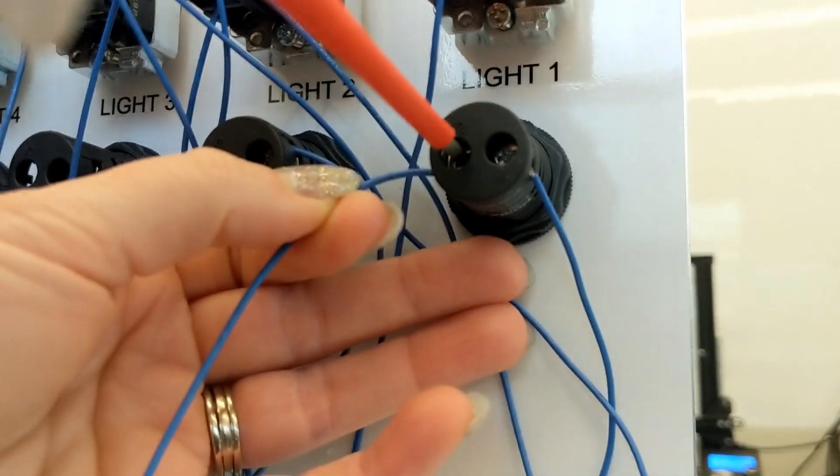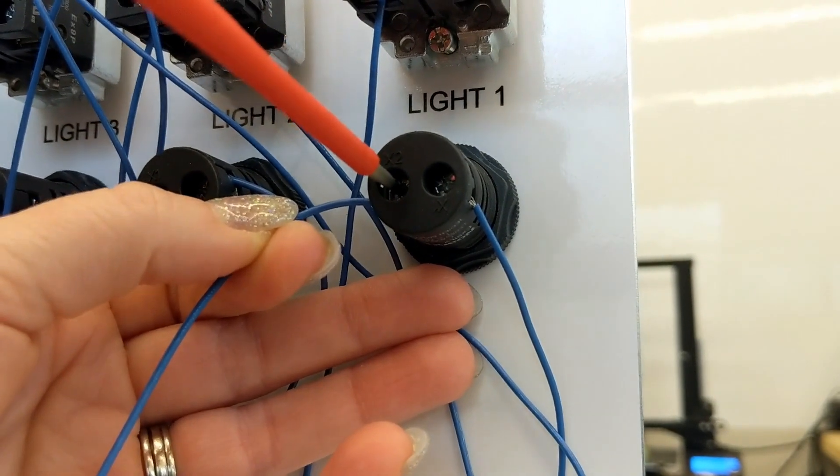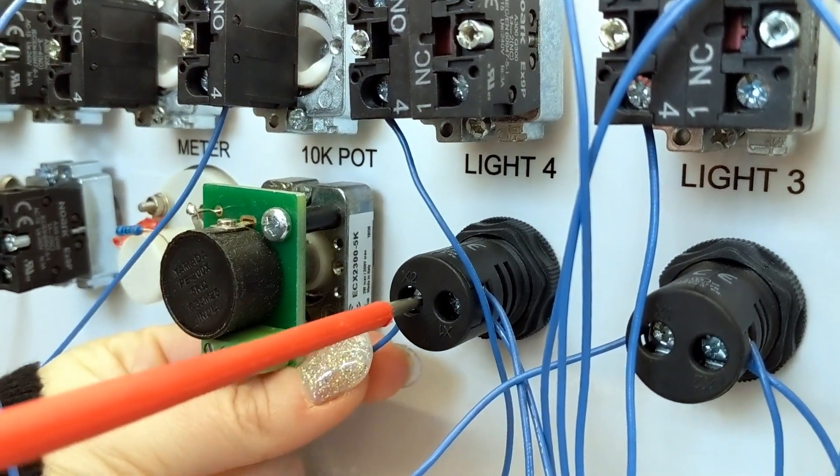Now we are going to do the same with our outputs. O slash zero goes to light 1 and just continue across to light 4.